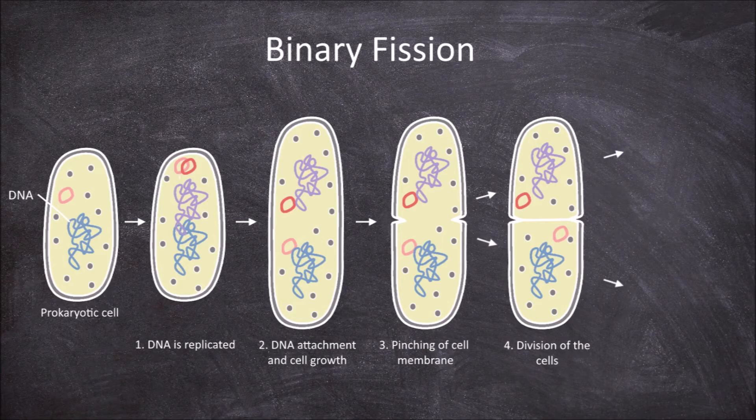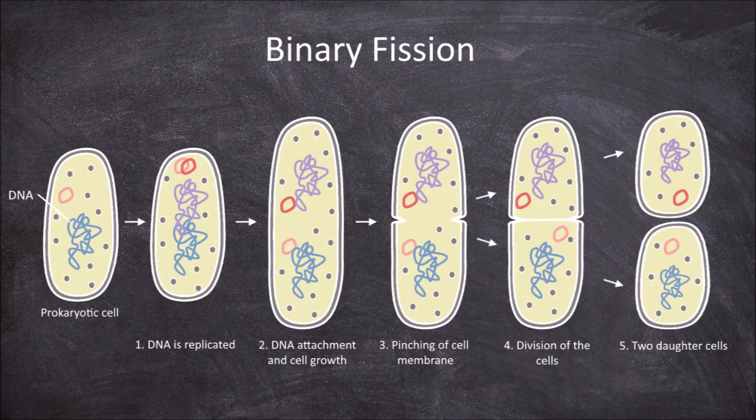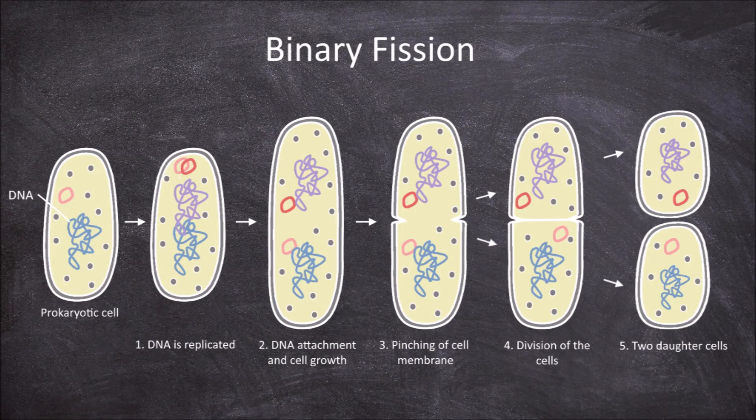This creates two daughter cells that have resulted from this binary fission. These daughter cells are genetically identical to the parent cell.